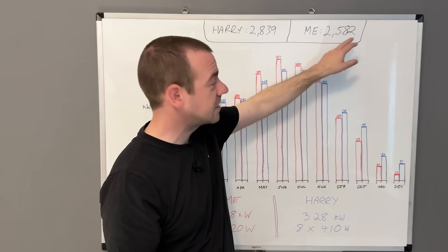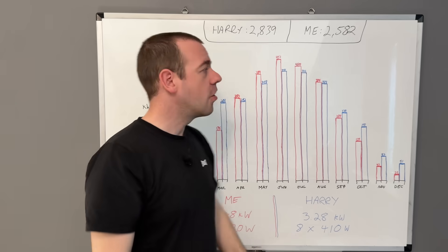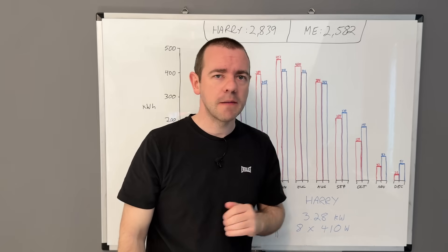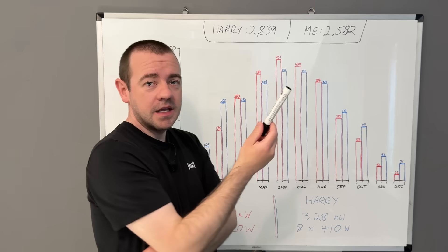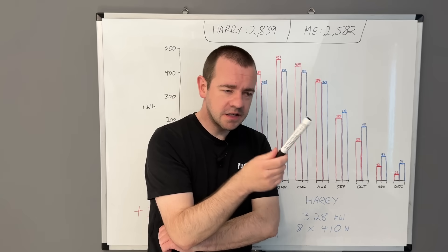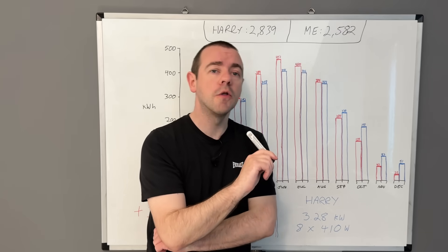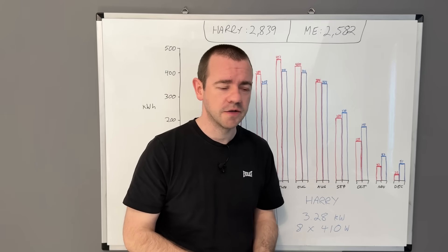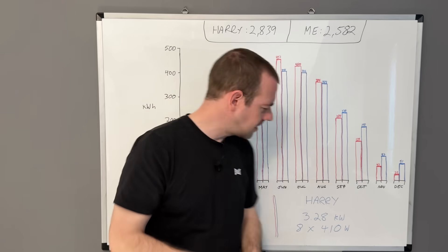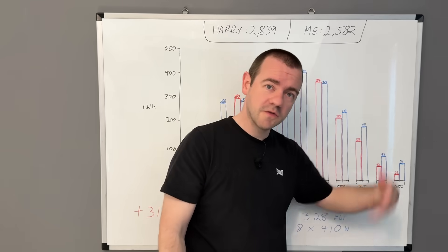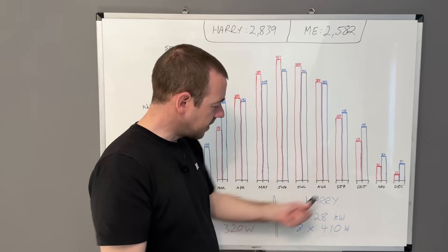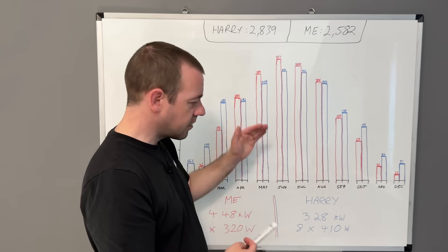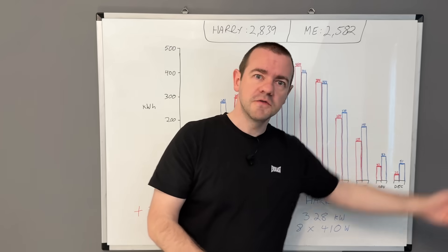He generated 2,839 kilowatt hours over the entire 12 months, and I generated 2,582 kilowatt hours over the same 12 month period. Yet my array is 30 odd percent bigger. That for me is evidence that his system is tailored to this environment way more than mine.